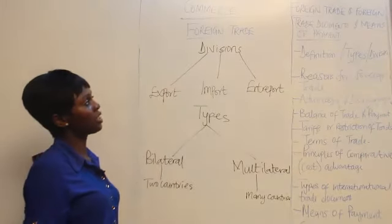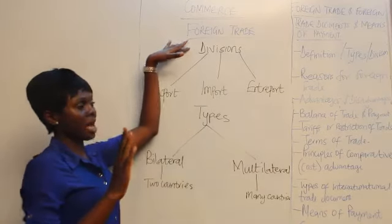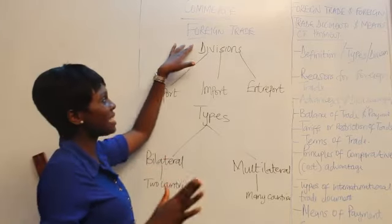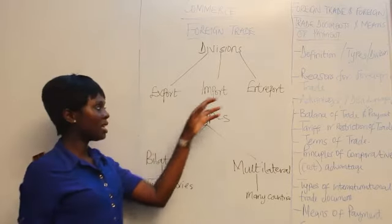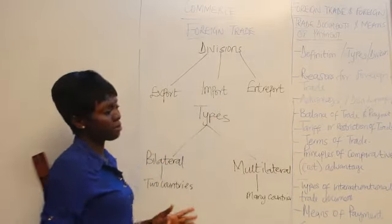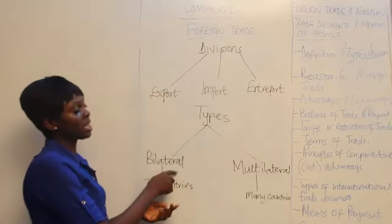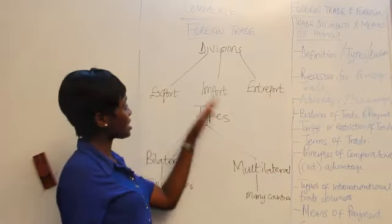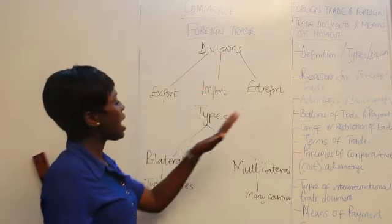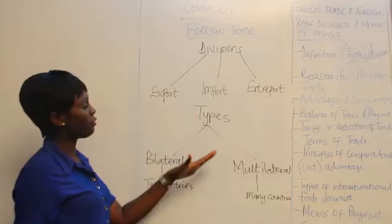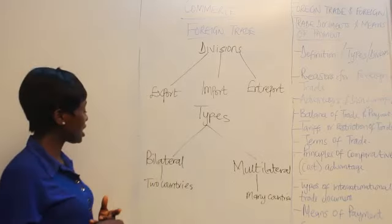Now we'll be looking at the types of foreign trade together. You can see on the screen we have divisions and we have types. The divisions of foreign trade or international trade are three: the export, the import, and the interport. The types of foreign trade are two: the bilateral trade and the multilateral trade. Notice the difference between divisions and types.